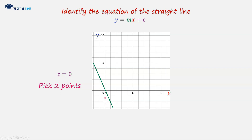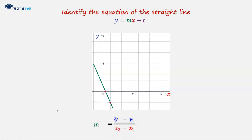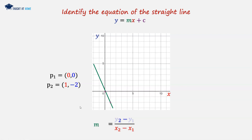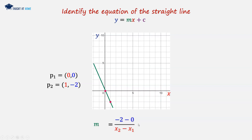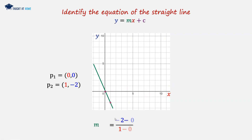We pick two points: the first point passes through the origin, so (0, 0). The second point has coordinates (1, -2). Recalling the gradient formula and substituting these in, we have minus 2 minus 0 in the numerator and 1 minus 0 in the denominator. Therefore m is going to be minus 2 over 1, or simply minus 2.